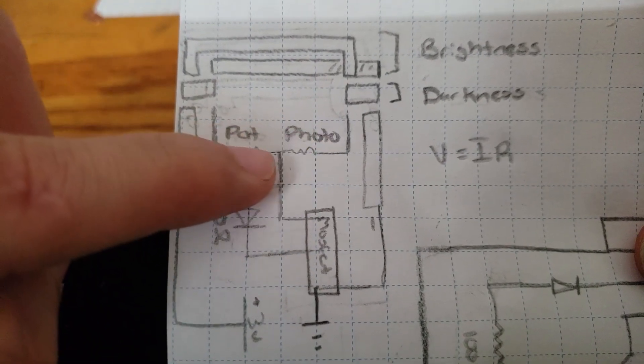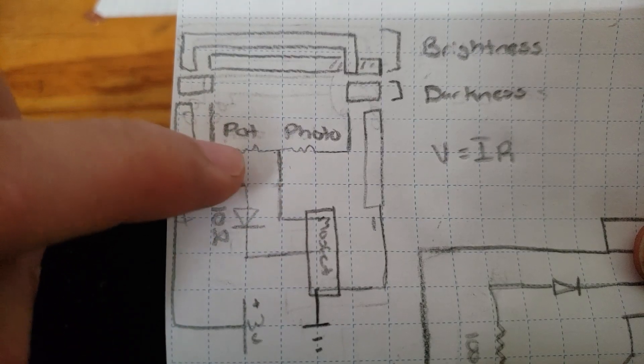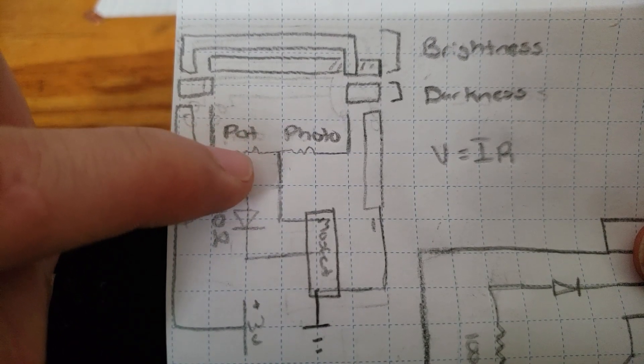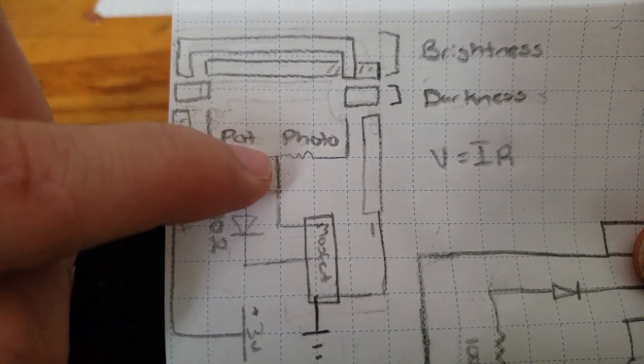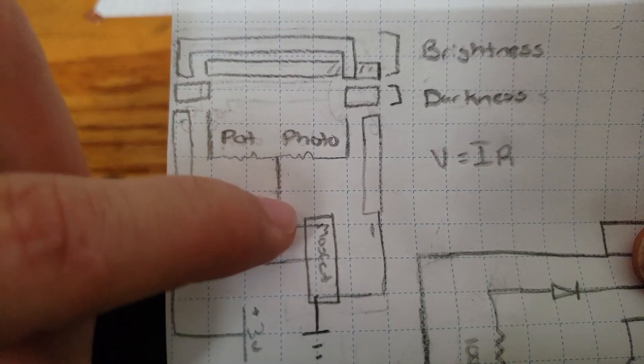The voltage divider here works such that the higher the resistance, the higher the voltage drop will be, meaning a lower voltage here in the middle.